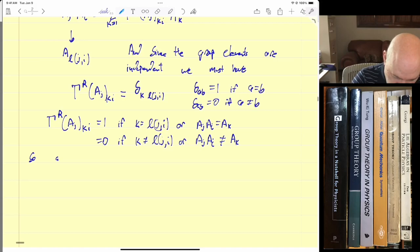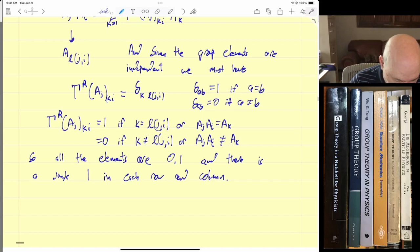So what we get is gamma_r(a_j)_ki equal 1 if k is equal to l(j,i), or a_j a_i equal a_k. And it's equal to 0 if k is unequal to l(j,i), or a_j a_i is unequal to a_k. Okay, so all the elements, as you can see it's a fairly easy representation, all the elements are 0 or 1 of the representation. And using properties of groups, the very elementary properties that we established earlier, there is a single one in each row and column.